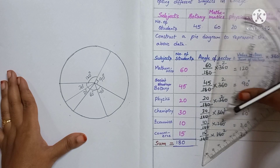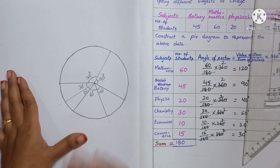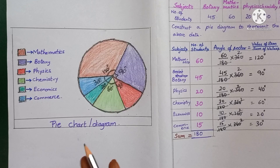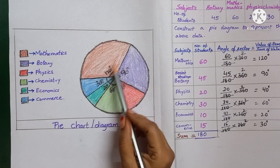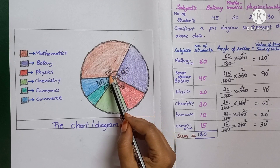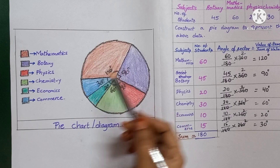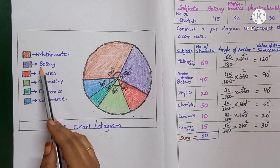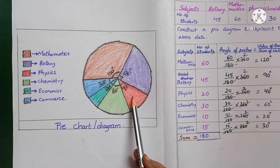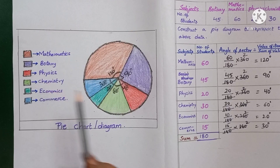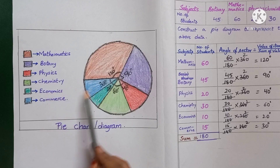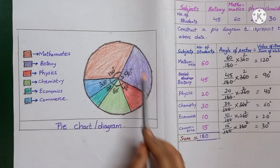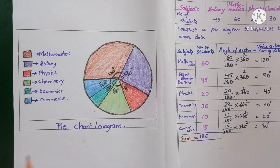This is how you draw the pie chart. You can decorate it colorfully — brown for mathematics, purple for botany, red for physics, green for chemistry, dark green for economics, and blue for commerce. The pie chart will look very beautiful with colors. This is about pie chart or pie diagram and how to draw it.